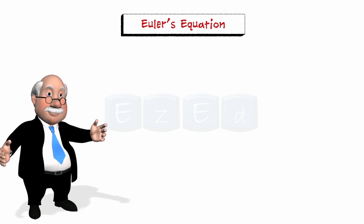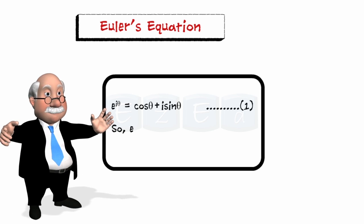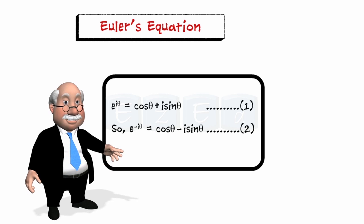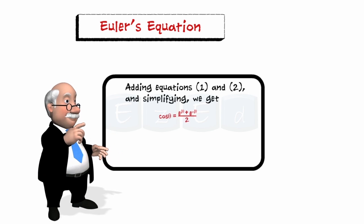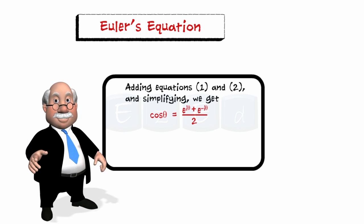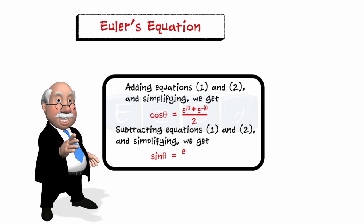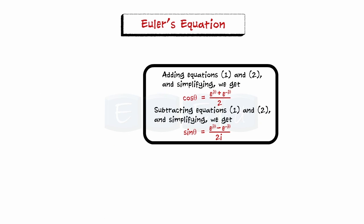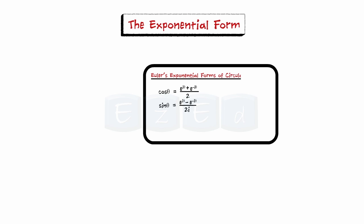From Euler's equation, e^(iθ) = cos θ + i sin θ, and so e^(−iθ) = cos θ − i sin θ. Adding and simplifying gives cos θ = (e^(iθ) + e^(−iθ)) / 2. Subtracting and simplifying gives sin θ = (e^(iθ) − e^(−iθ)) / 2i. These are called Euler's exponential forms of circular functions. For a complex number z, we define cos z and sin z analogously.